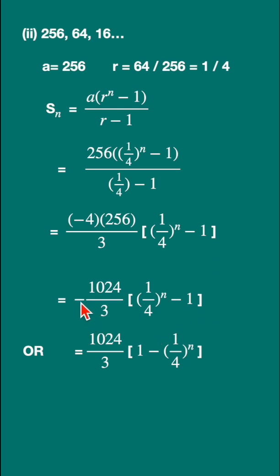Or further, if you want to simplify it, you want to make this negative positive, then you just have to write down 1024 upon 3. In the bracket you should interchange: 1 minus 1 upon 4 raised to n.